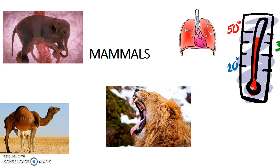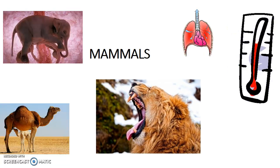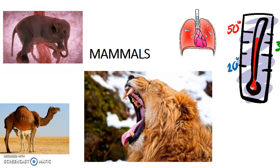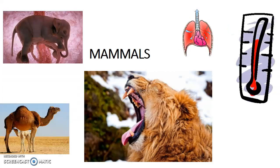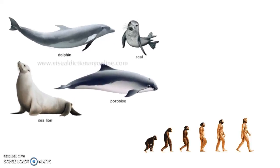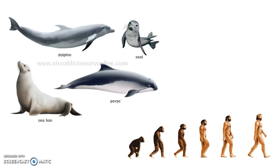Mammals reproduce by internal fertilization. Most mammal bodies are covered by hair, and all of them breathe with their lungs, even if they live in the sea. They can maintain their own internal temperature. The majority of mammals are terrestrial, but some of them live in the sea and are called marine mammals, like dolphins and whales. Humans are mammals too.